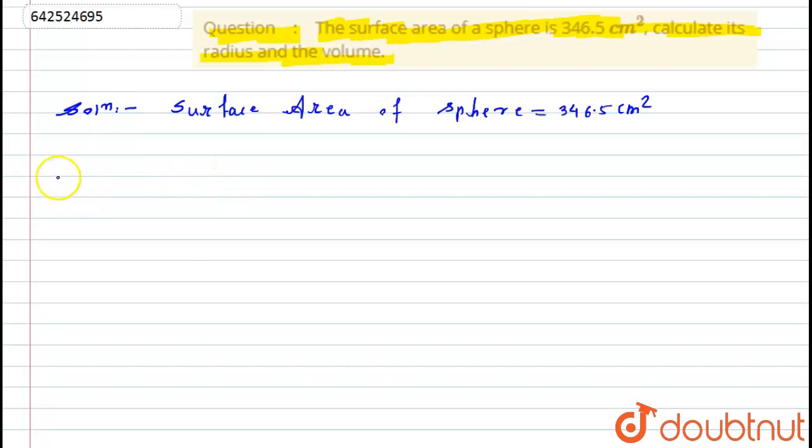As we know that surface area for the sphere is nothing but A equals 4πr². Now I put the values over here. So here I get r² equals A divided by 4π. So here I put the value of A, 346.5 divided by 4 into π is 22 by 7.